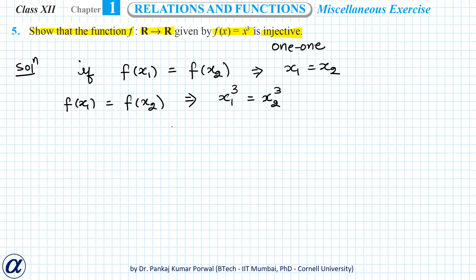x₂³. This implies x₁³ minus x₂³ equals zero. And if I do factors of x₁³ minus x₂³, I get (x₁ - x₂) into (x₁²